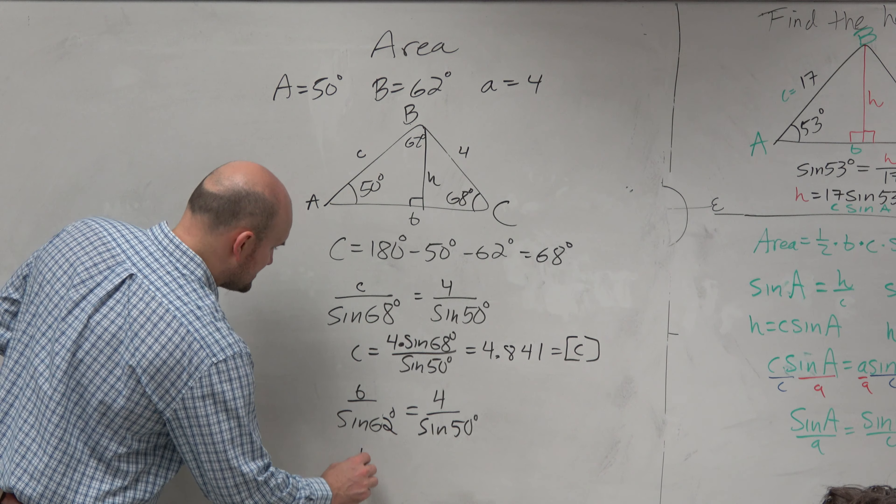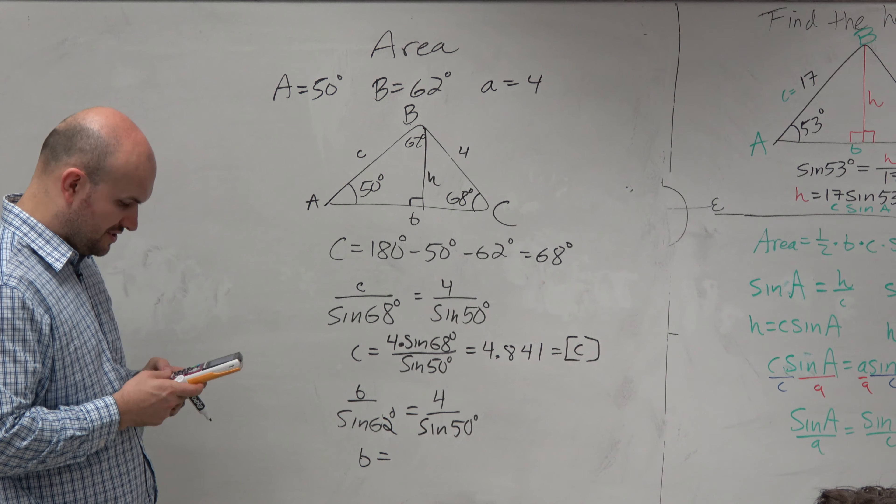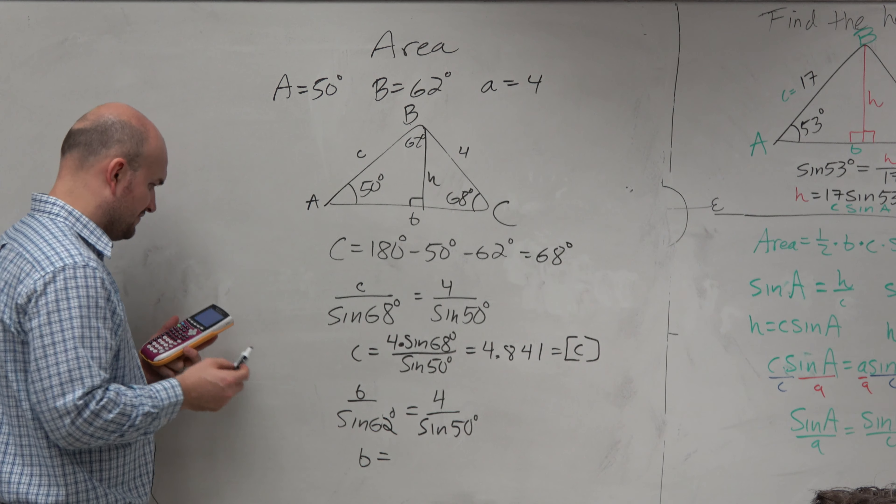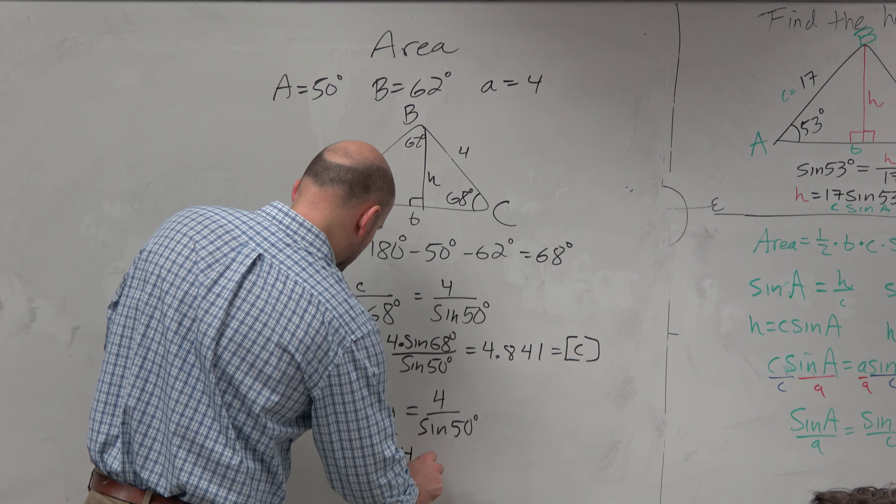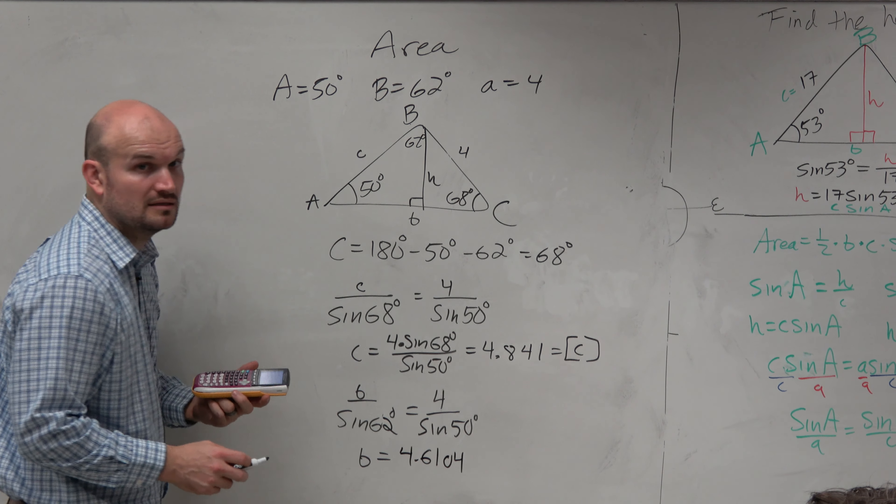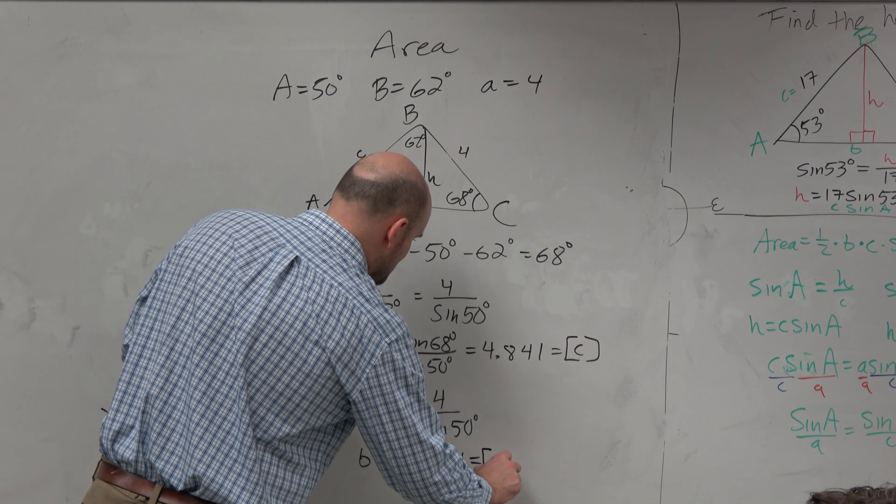So when I do this, I'm not going to rewrite it. I'm just going to say it would be 4 times the sine of 62 divided by the sine of 50. And I get 4.61. Yes? OK. So and I'm going to store that as B.